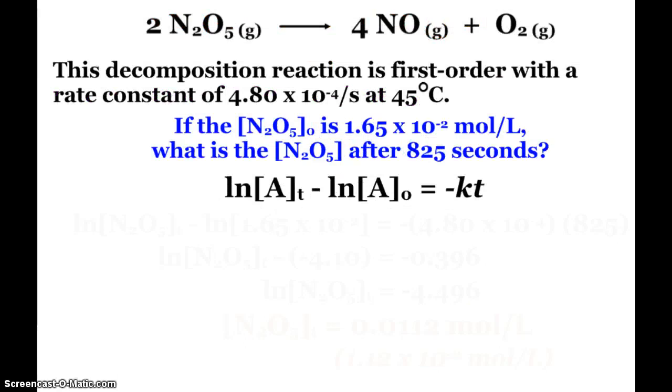So here we have a reaction, the decomposition of dinitrogen pentoxide. It's first order, and that's the rate constant at 45 degrees Celsius. So if the initial concentration is 1.65 times 10 to the negative 2 moles per liter, what is the concentration after 825 seconds? So we know it's a first order reaction, we know that that is the rate law, and the integrated rate law.